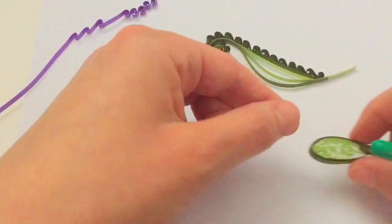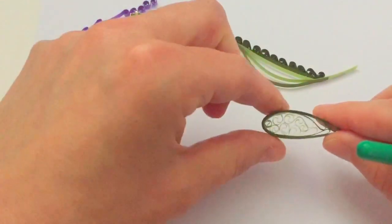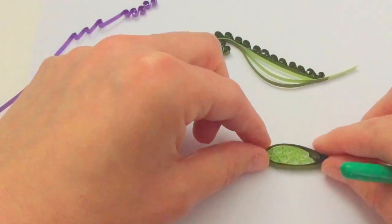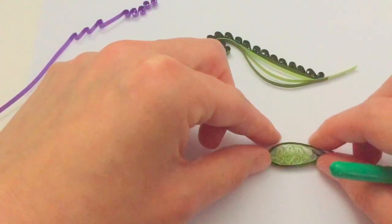Or I used some simple leaves that I made on my quilling comb and just added a few in there.